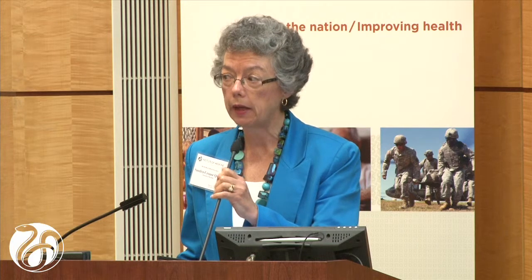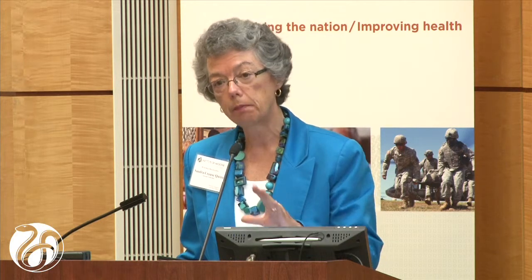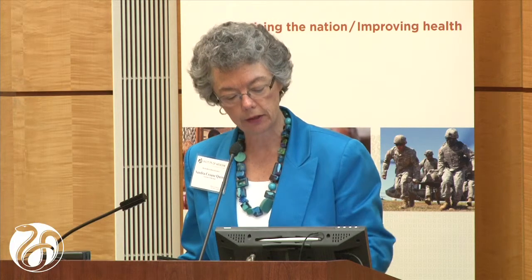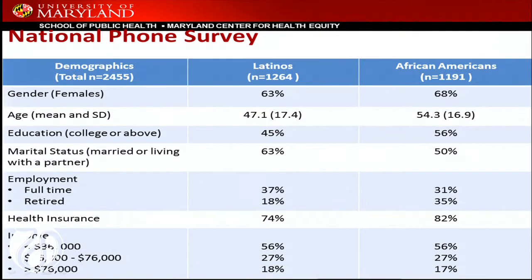We looked at the literature to guide our survey development and mirrored some items on both surveys. The researcher survey was publicized as an online survey that went out to members of PRIM&R — Public Responsibility in Medicine and Research. Respondents were researchers with at least 14 years of experience, some IRB members, research staff, and largely white with smaller minority participation. Our national phone survey was a random sample of just African Americans and Latinos — largely women, about 45% Latinos, 56% with a college degree, with representation across income levels.